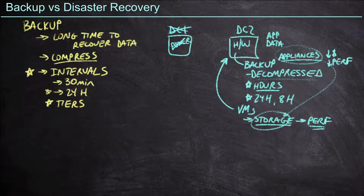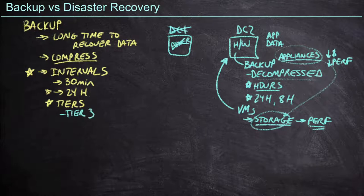Worst case scenario, we could actually be talking about days — it might take several days to get back online because of how many steps we have to go through. Is this acceptable? If we've got a tier three application list that doesn't need to be back online for a few days, then we could probably use backups for tier three. In fact, this is a pretty common methodology for getting tier three applications back online.